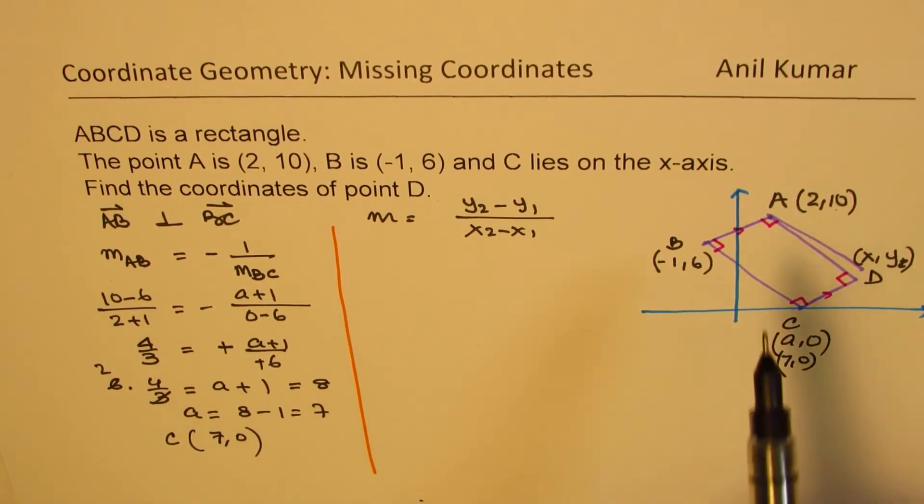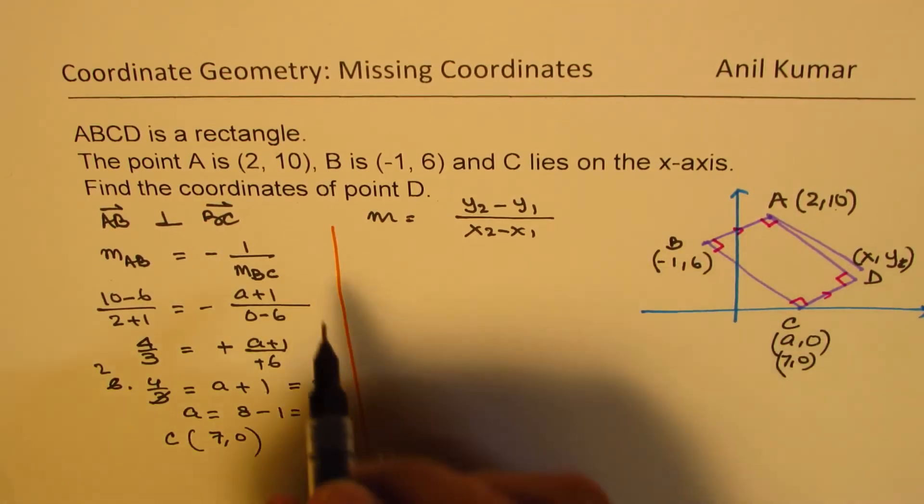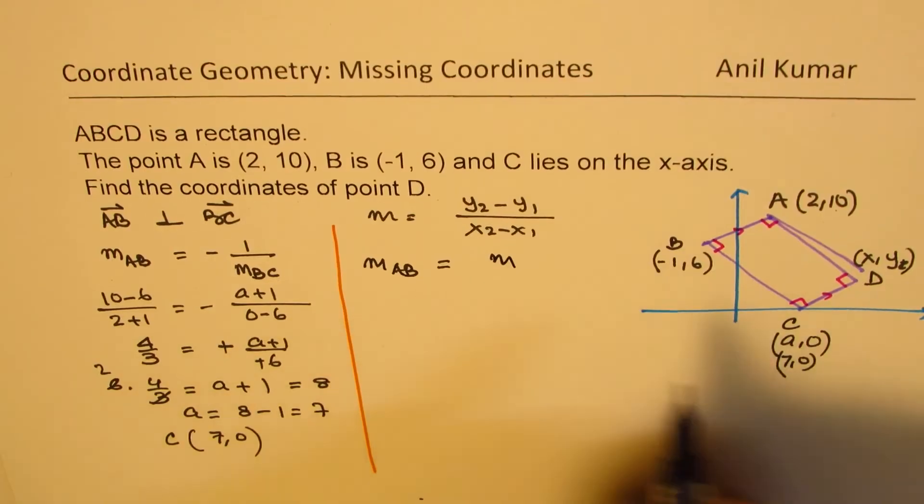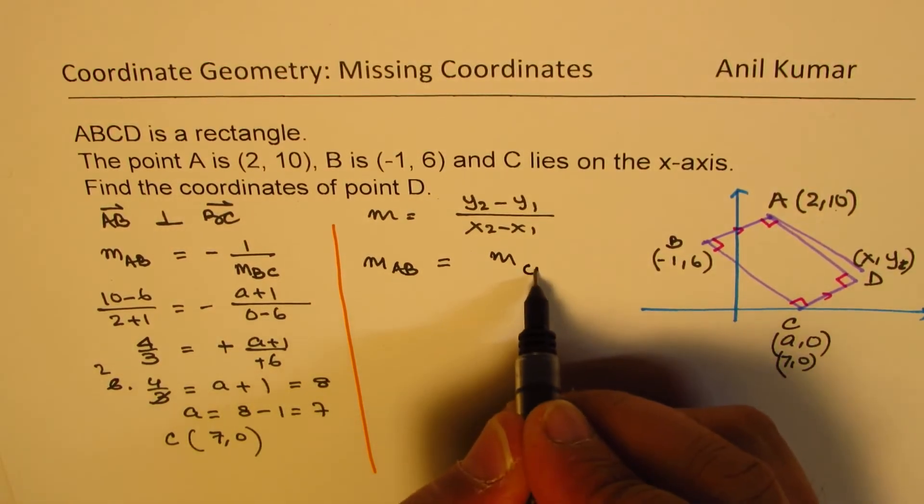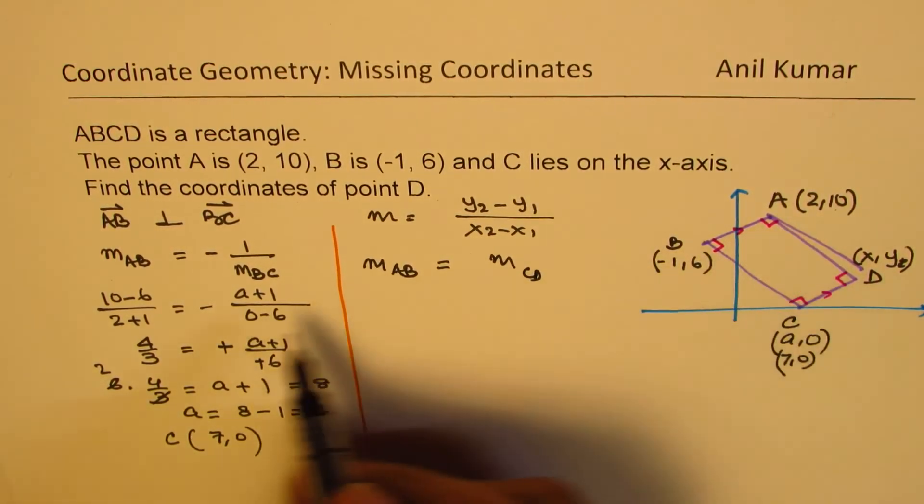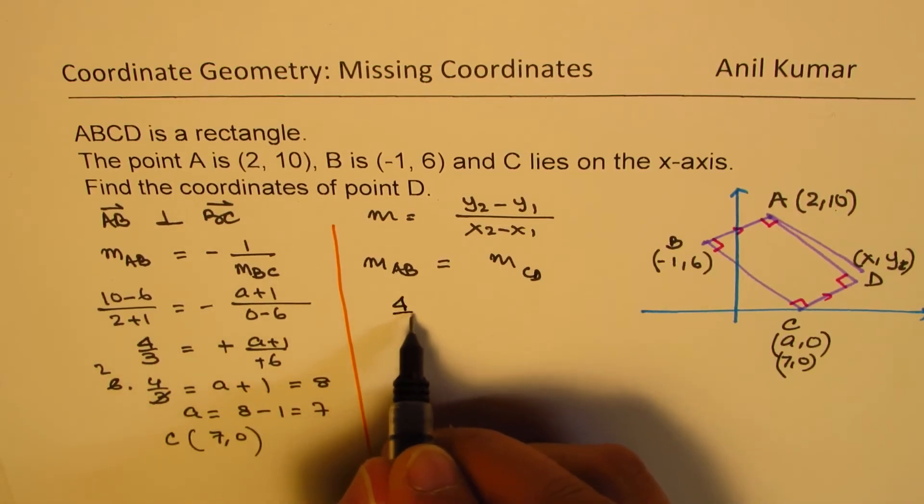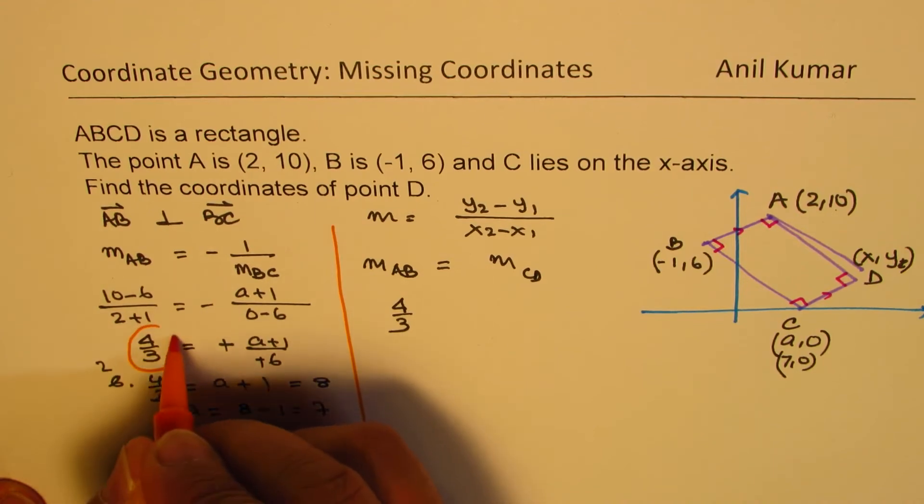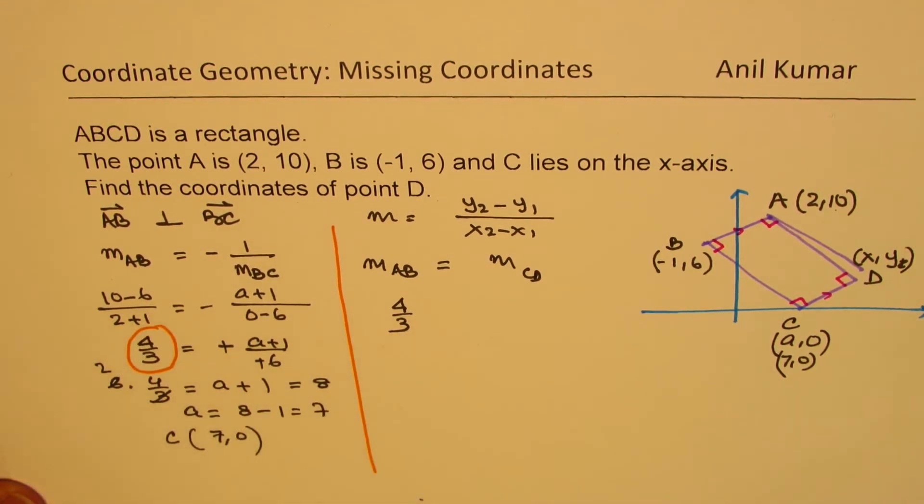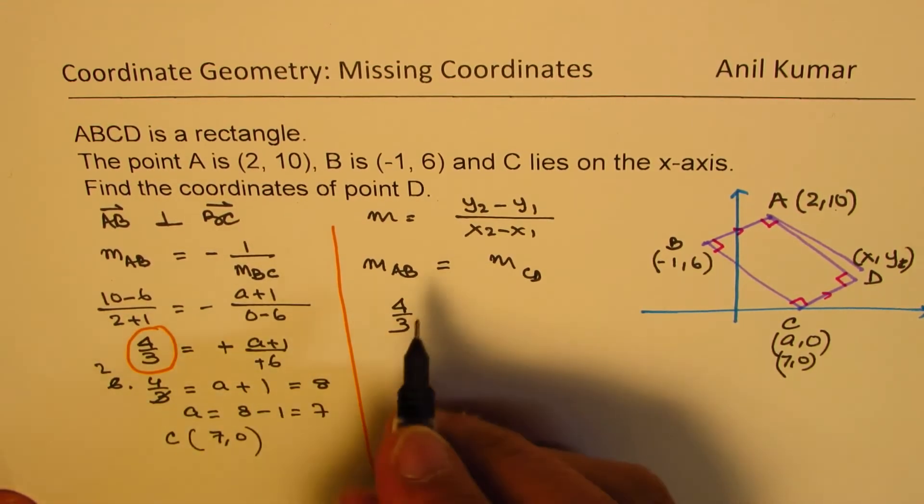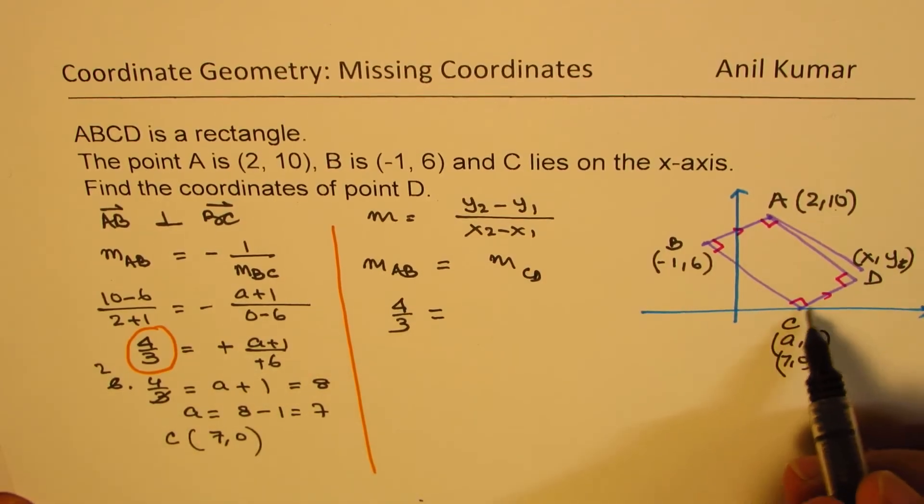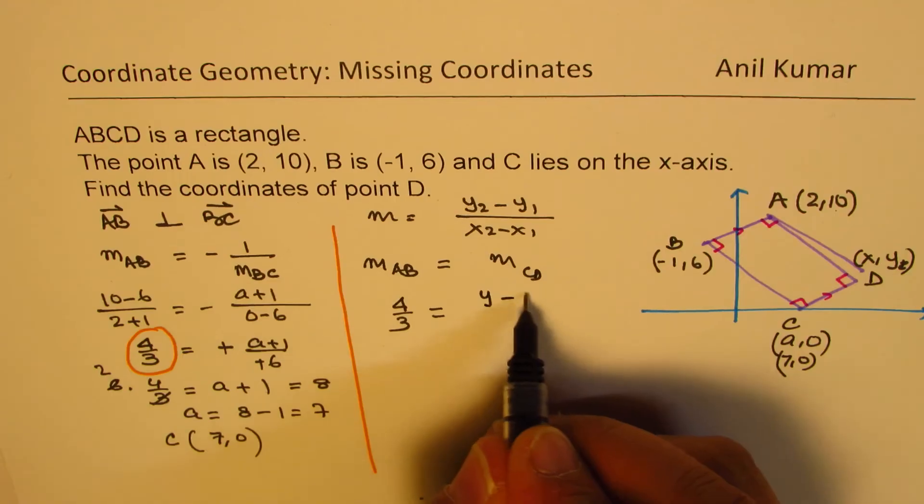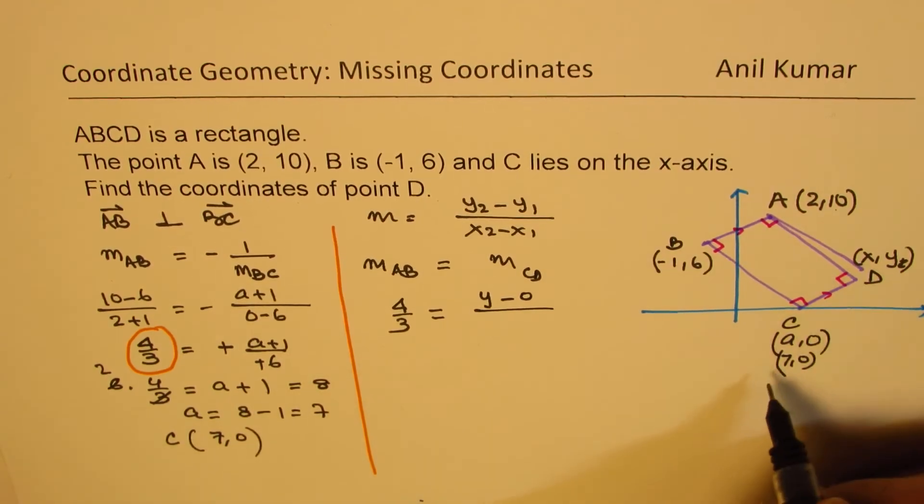We can now equate these two slopes. So we know slope AB is equal to slope CD. Slope A to B we just found is 4 over 3. We are using this value 4 over 3, which we calculated. That should be equal to slope of C to D. Now that is (y - 0) divided by (x - 7).